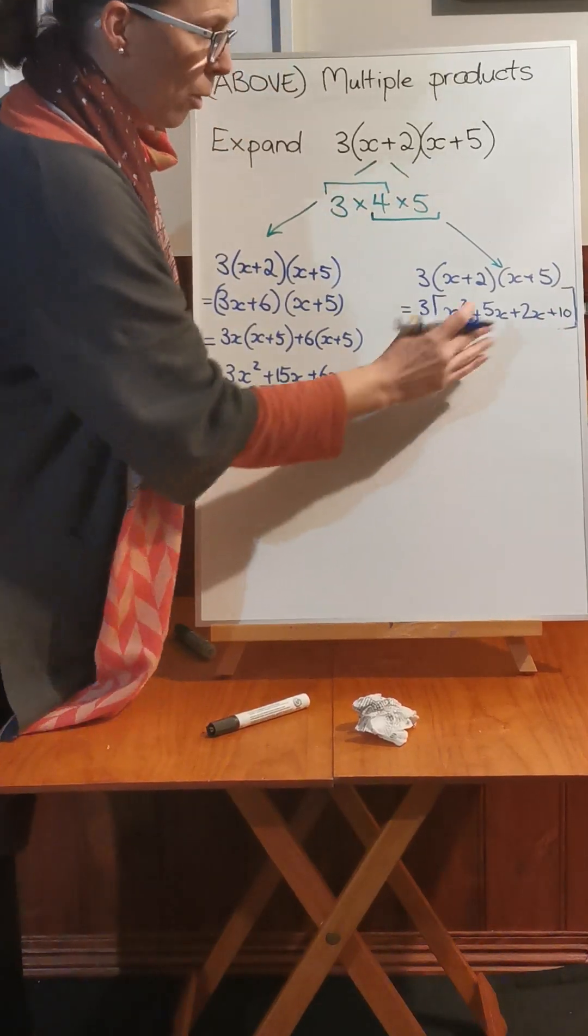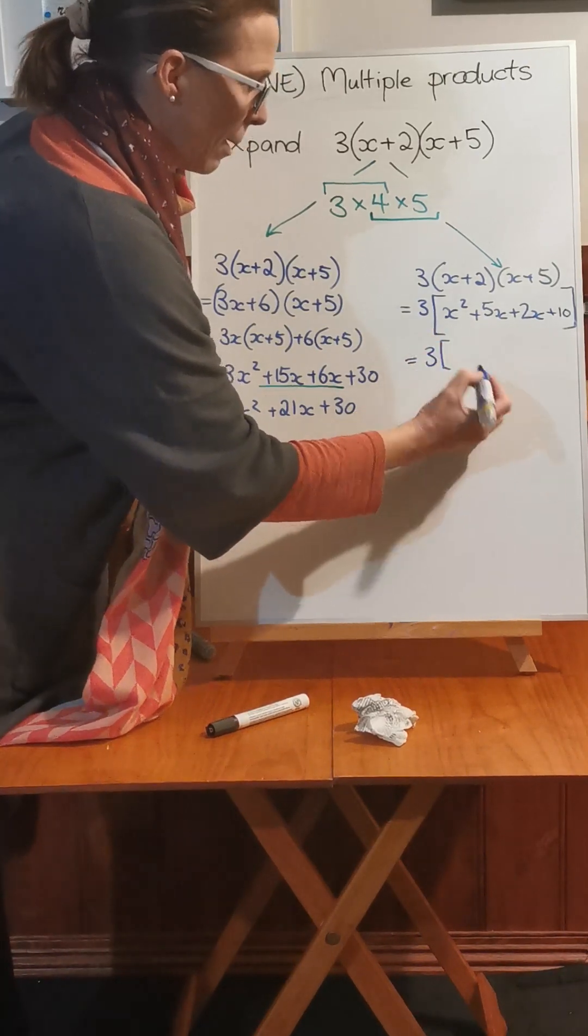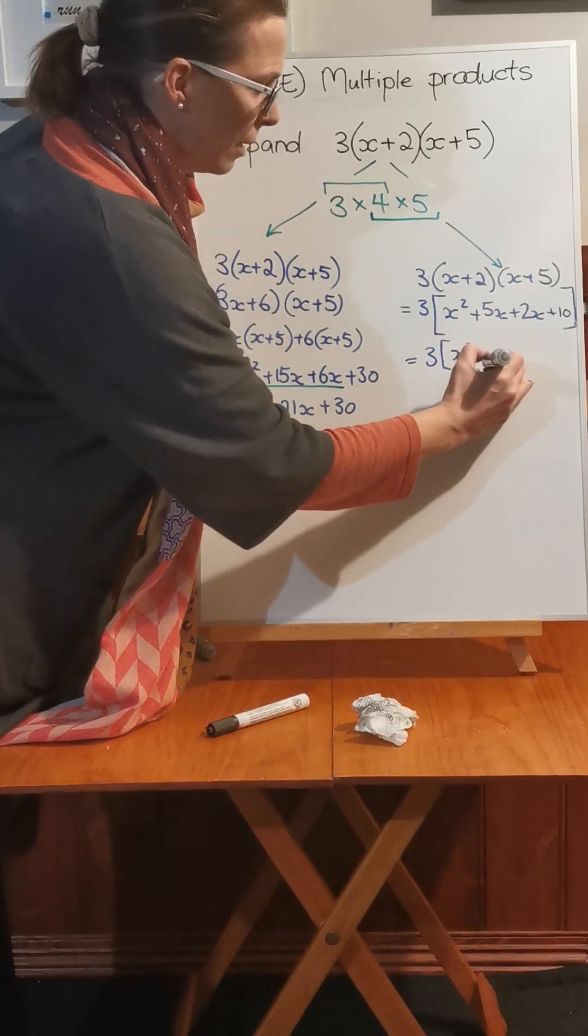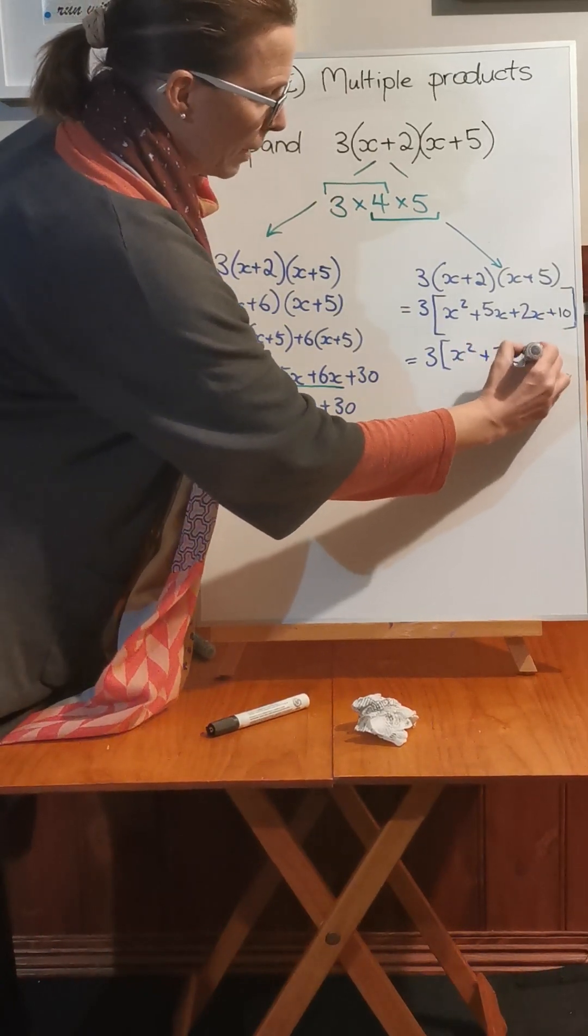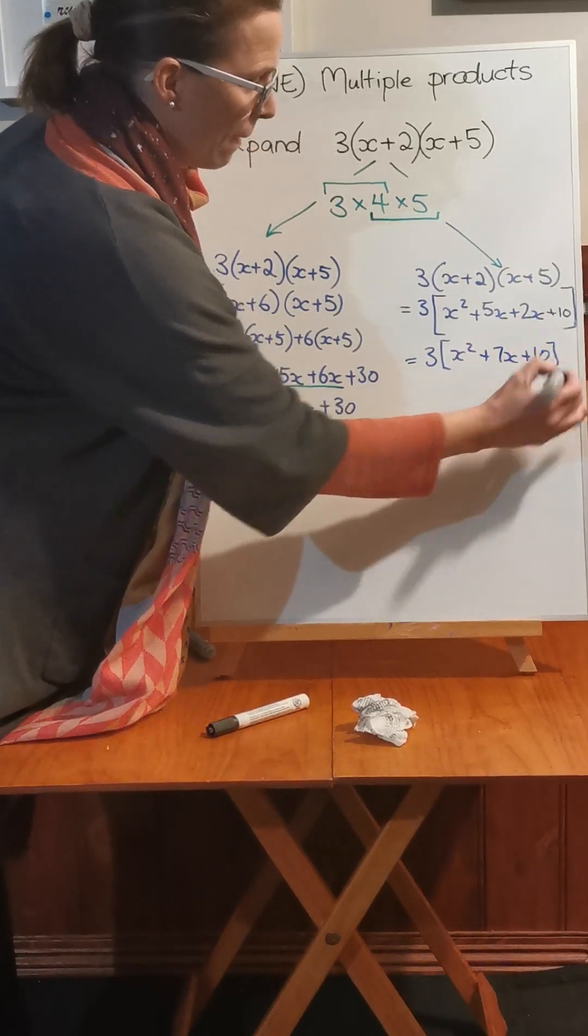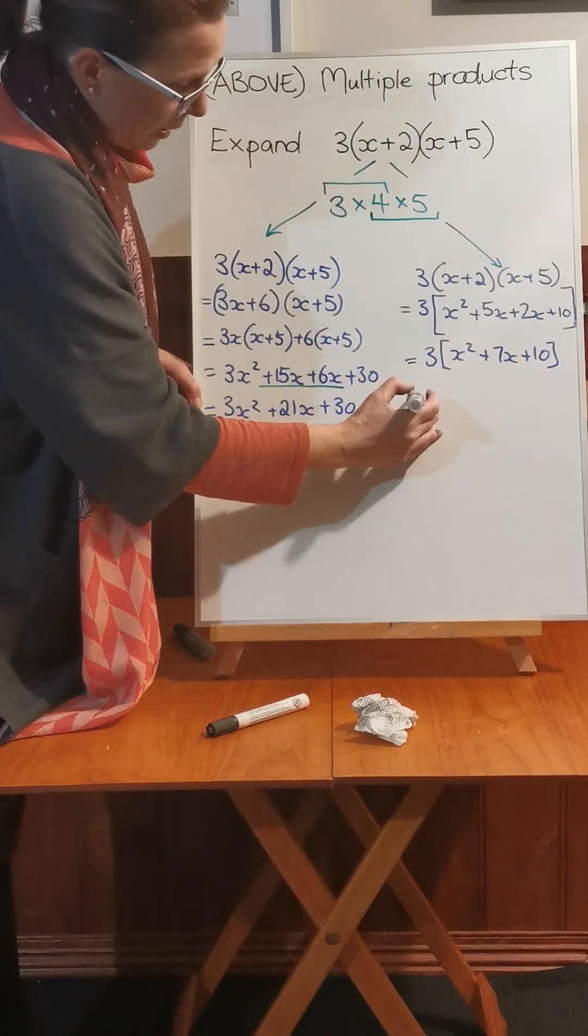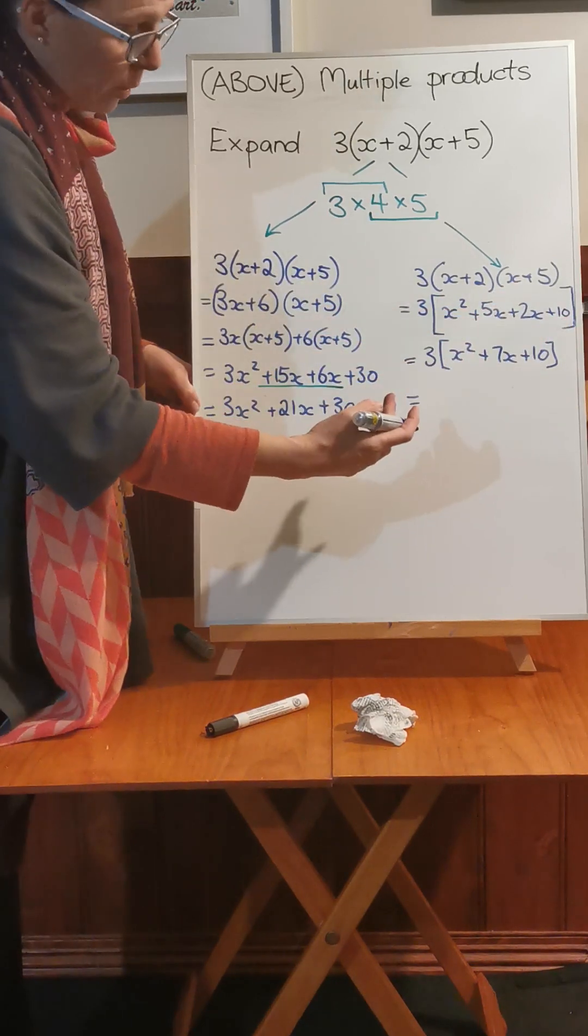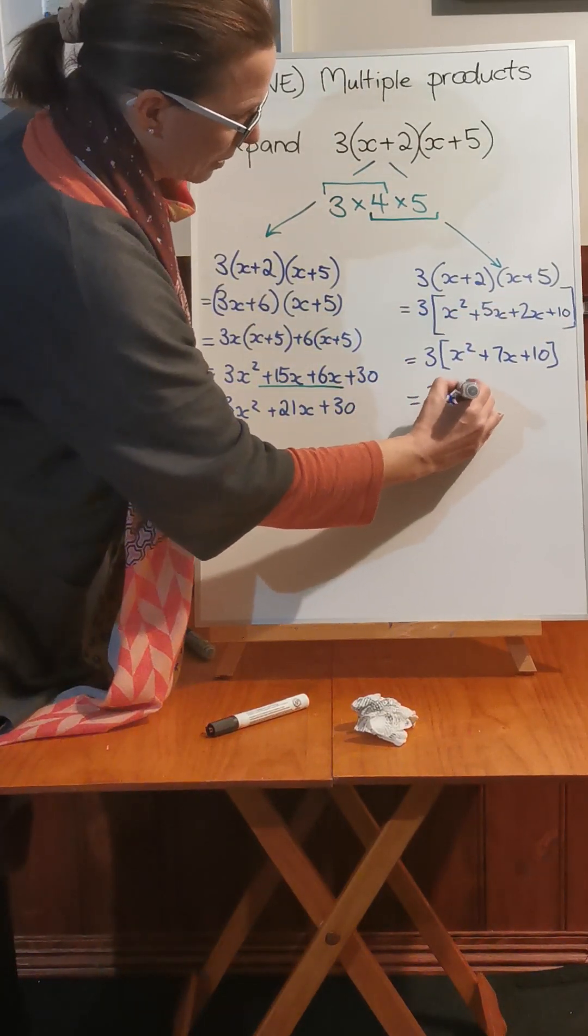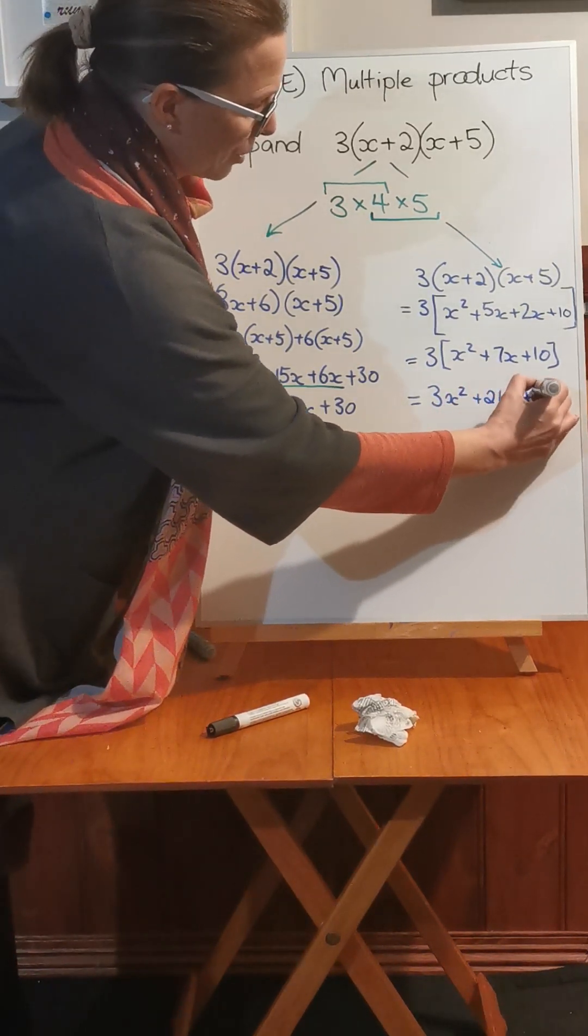I would like to simplify that. So I've got 3 and I'll just keep that big bracket. X squared, 5x plus 2x is 7x plus 10. And now I've multiplied the second two things together. The only thing I need to do now is multiply 3 by each one of those terms. So 3x squared plus 21x plus 30.